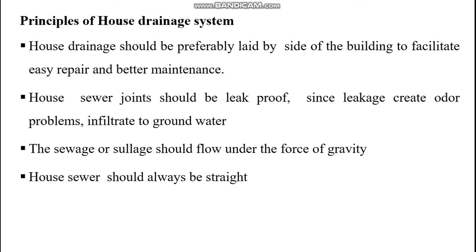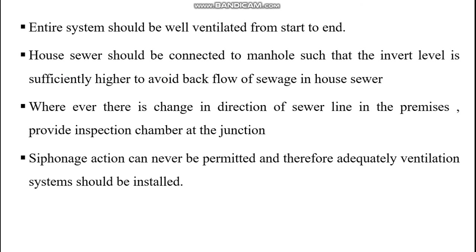The sewage or sullage should flow under the force of gravity. House sewer should always be straight. The entire system should be well ventilated from start to end. House sewer should be connected to a manhole such that the invert level is sufficiently higher to avoid backflow of sewage. Wherever there is a change in direction of the sewer line, provide an inspection chamber at the junction. Siphonage action must never be permitted, and therefore an adequate ventilation system should be installed.